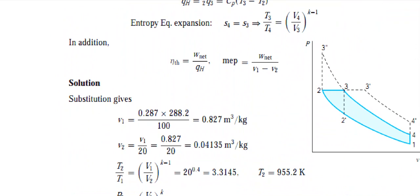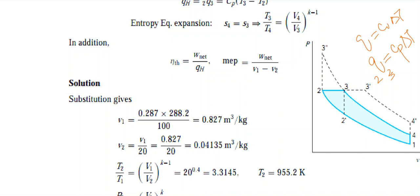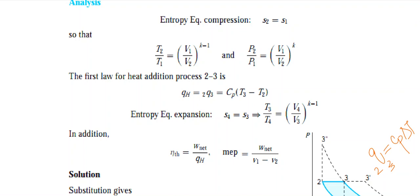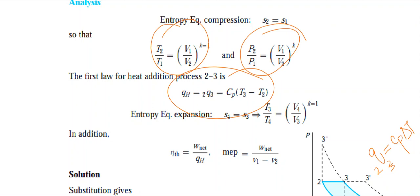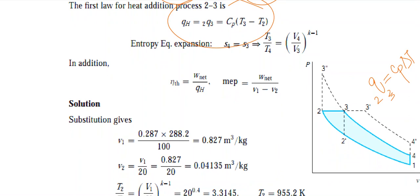The processes are the same from State 1 to 2 (adiabatic compression), but the key difference is from 2 to 3: the Diesel cycle uses constant pressure heat addition, so QH = CP·ΔT (not CV·ΔT as in the Otto cycle). From 3 to 4 is adiabatic expansion, and from 4 to 1 is constant volume heat rejection.